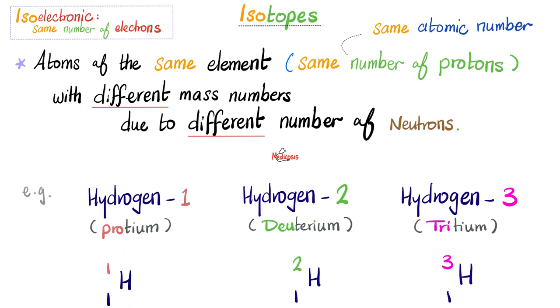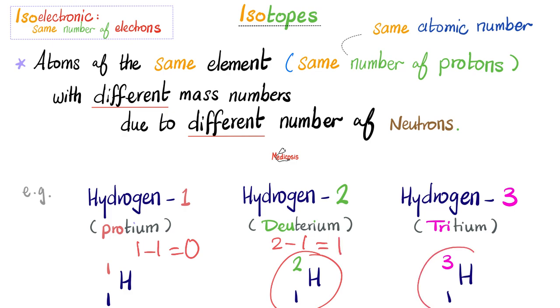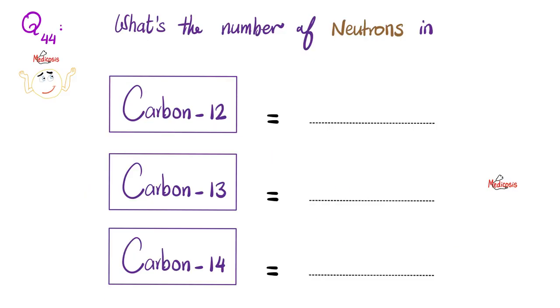How many neutrons in each? For hydrogen-1: 1 minus 1 equals 0 neutrons. For hydrogen-2: 2 minus 1 equals 1 neutron. For hydrogen-3: 3 minus 1 equals 2 neutrons.